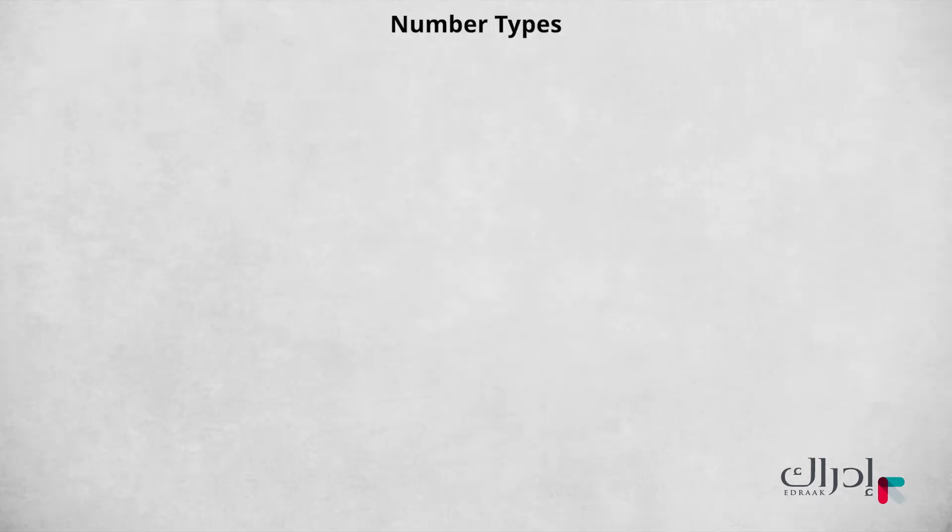These are simply numbers that tell you how many. They express an amount. We use cardinal numbers to count people or things. They indicate a number of people or objects.